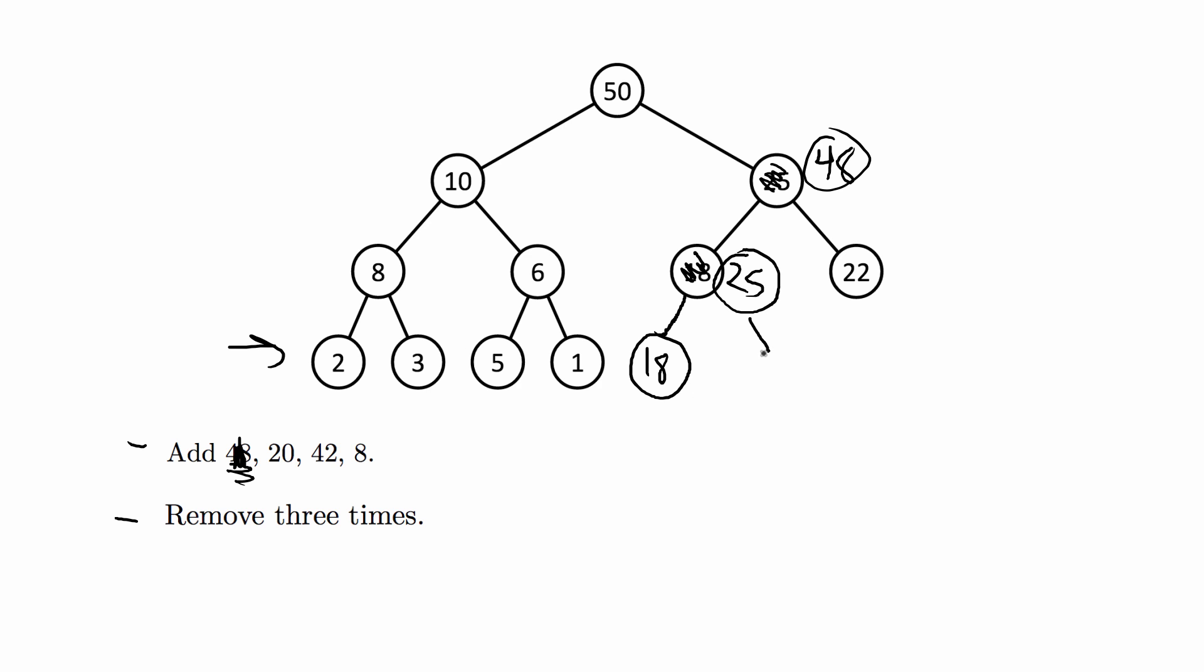We're going to do the same thing with 20. We're going to add it to the next available leaf position. That's here. We don't have to push it up or do any swaps because 20 is less than 25. We're done with that one.